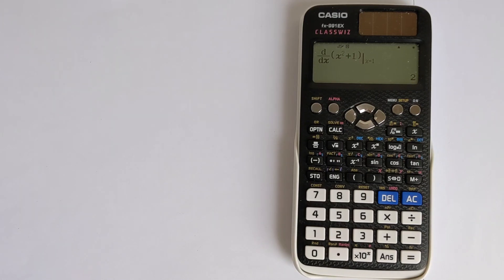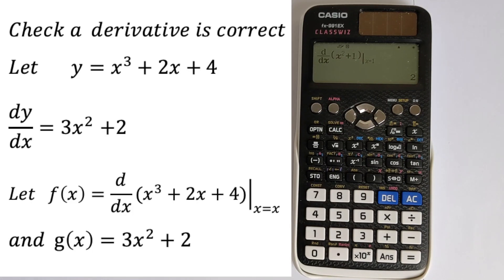And the way to do that is we're going to define f of x to be the derivative of that function, and we're going to be putting into the calculator x equals x. So we're going to be evaluating at all the different points of x. And then we're going to set g of x equal to what we think the derivative is.